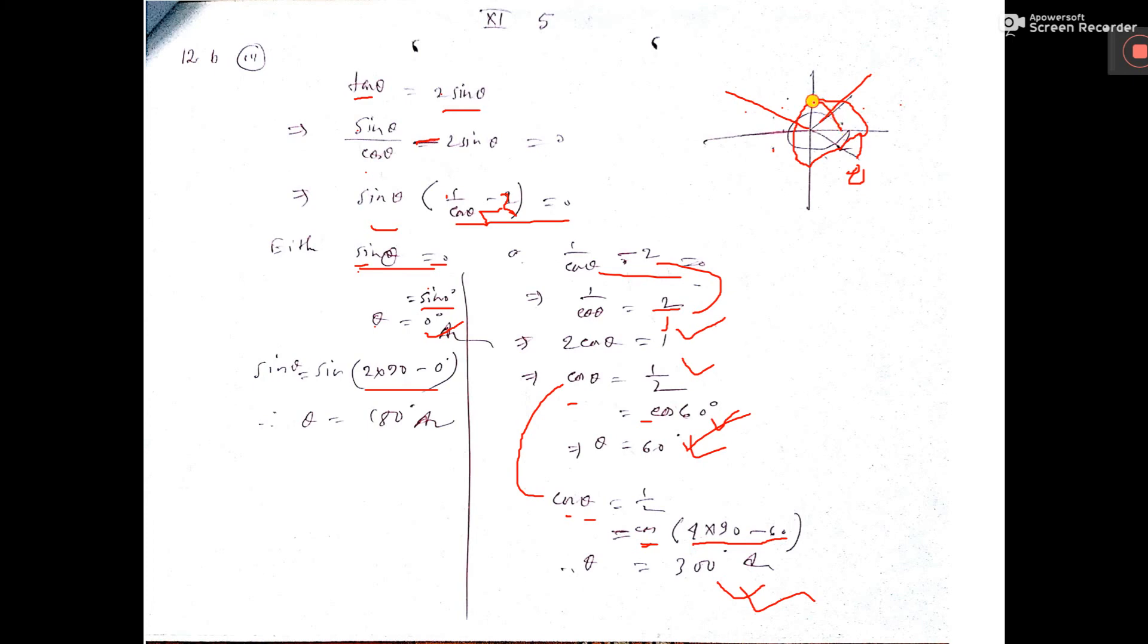Using 2×90° - θ with θ = 0°, we get 180° - 0° = 180°. The complete solution is θ = 0°, 60°, 180°, and 300°.